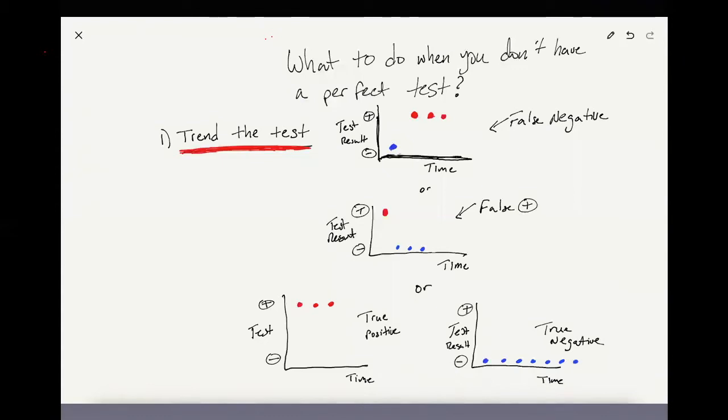Those that you tested that remain positive, those are the true positives. And those that remain negative and don't have the disease, those are the true negatives. This trending analysis is an important way of making up for a test that's imperfect.